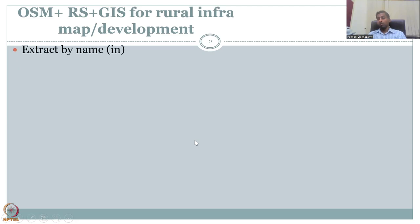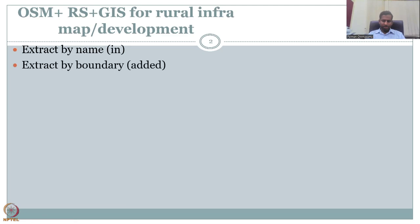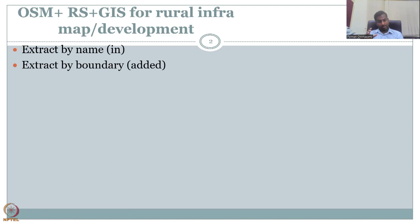So let's see how we are going to map OSM plus RS plus GIS for rural infrastructure mapping and development. We will go through the steps and then follow them in the OSM platform. We will first extract by name — name of the attribute — and then the boundary. OSM is mostly for extracting vector shapefiles, not raster, because you won't expect people to share raster for a particular area like a school boundary.